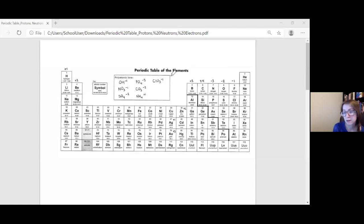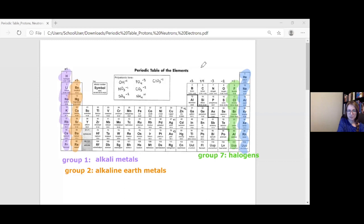Some of those groups have names other than just a number that we want you to know. So looking at groups one, two, seven, and eight, those are the ones we want you to know the names of. Group one, we call the alkali metals. Group two is similar, but slightly different. We call the alkaline earth metals. Group seven, we call the halogens. Group eight, we call the noble gases.